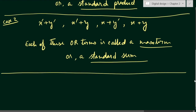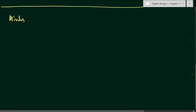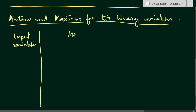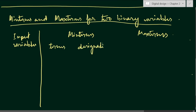Now we have seen what is a minterm and maxterm. For simplicity, I will make a table here showing minterms and maxterms for two binary variables. In this table we will have the terms and their designation for both minterms and maxterms.